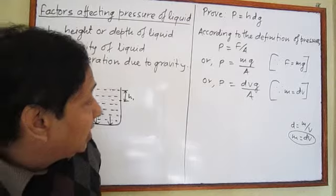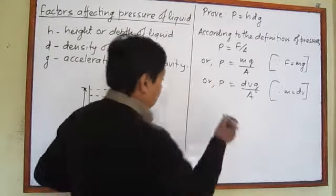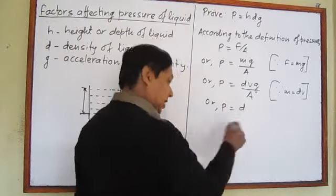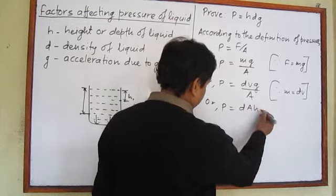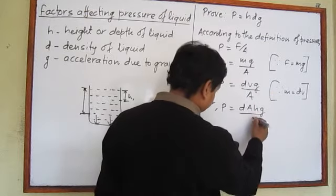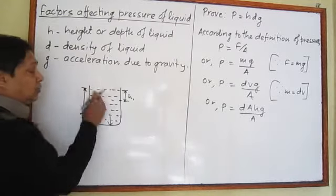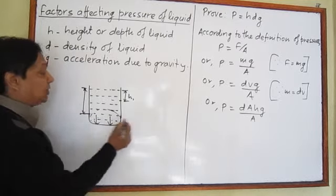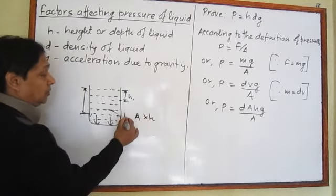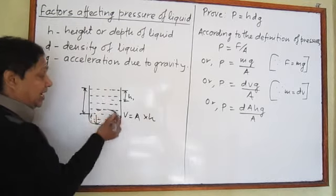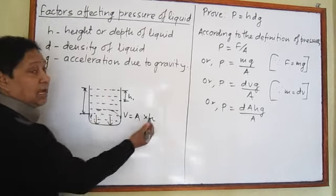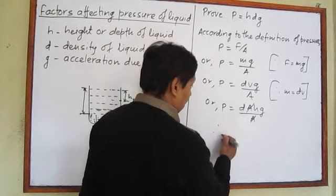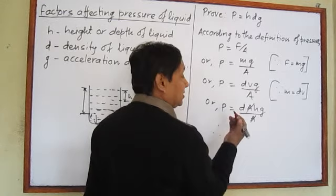So now P = (d × V × g) / A. In place of V we write A × H, because the volume of the liquid in the container equals the area of its base times its height, so V = A × H. Substituting, A in the numerator and A in the denominator cancel out. Therefore, pressure of liquid P = H × D × G.